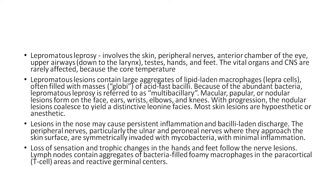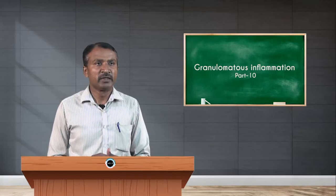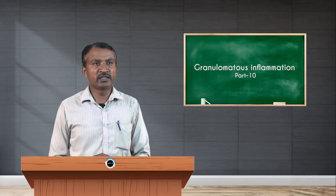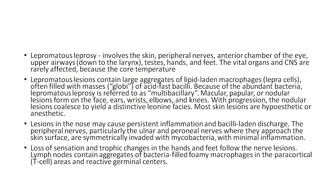The morphology of lepromatous leprosy involves the skin, peripheral nerves, anterior chamber of the eye, upper airways down to the larynx, testes, hands and feet. The vital organs and central nervous system are rarely affected, but the core temperature varies. Lepromatous lesions contain large aggregates of lipid-laden macrophages, called lepra cells.